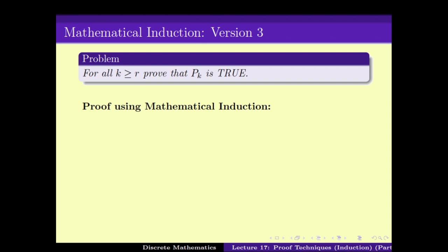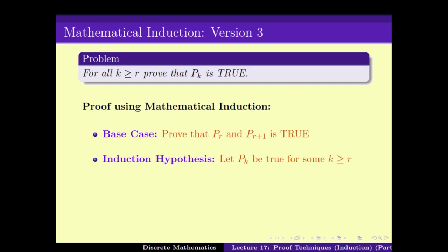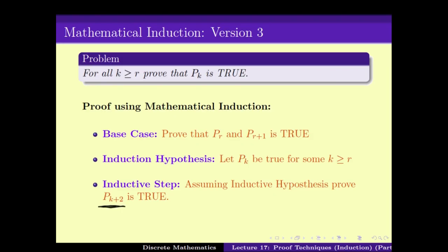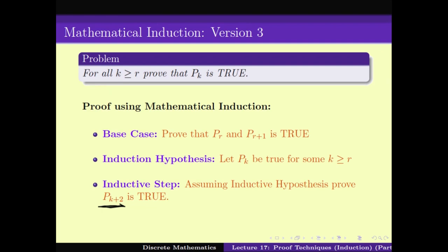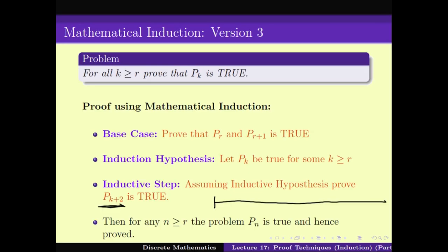The second version is when the base case does not start from 1. It is a slight modification where, if we have to prove that for all k greater than or equal to R, Pk is true, then we start with the base case where Pr is true. Then the induction hypothesis assumes Pk is true for some k ≥ R, and the inductive step proves Pk+1 is true. We end up proving that for all n ≥ R, Pn is true. We saw in the last video how to solve a problem using this version.